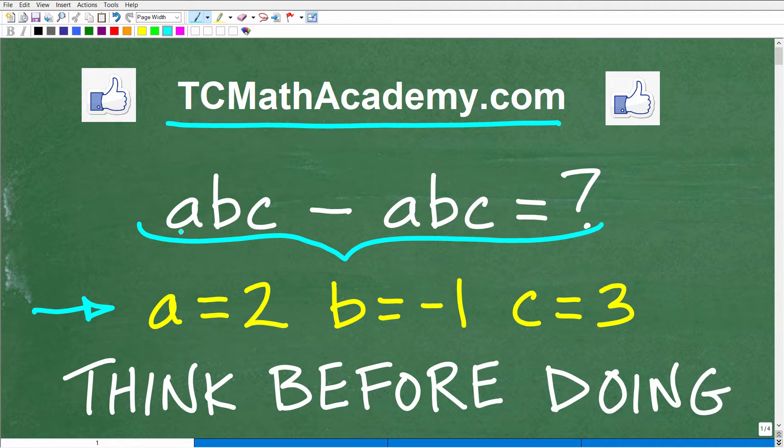Of course, you can see the problem. We have ABC minus ABC. What is this equal to, given that A is equal to 2, B is equal to negative 1, and C is equal to 3.